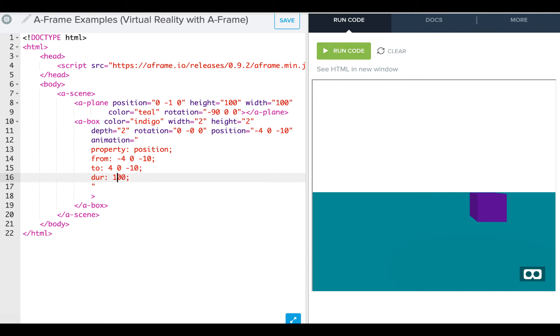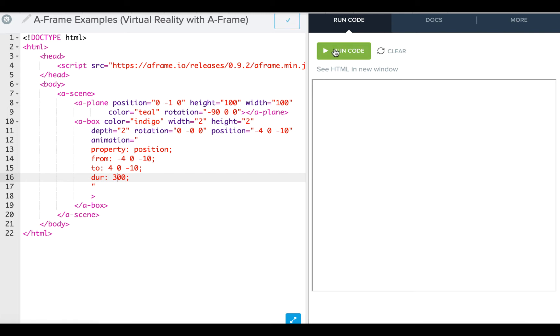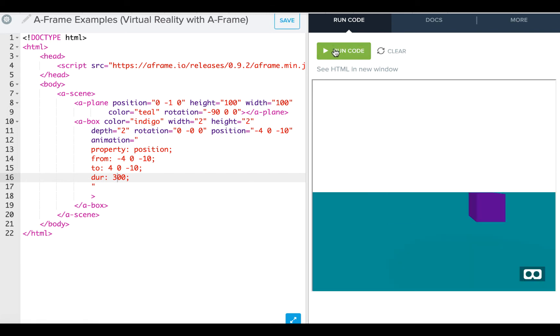If I want it to go faster, I could say maybe 300, and now I see my cube slide really quickly. And if I want it to go slower, I can add to 3000, so essentially three seconds. And I see my cube slides over slowly.